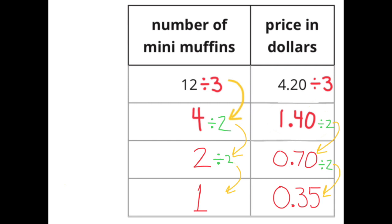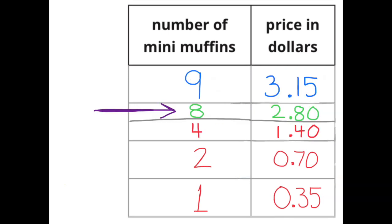$4.20 ÷ 3 = $1.40. $1.40 ÷ 2 = $0.70. And $0.70 ÷ 2 = $0.35. At this rate, 8 muffins would cost $2.80 and 9 muffins would cost $3.15. $3.15 is too much. So the most mini-muffins Diego could buy at this rate would be 8 for $2.80.